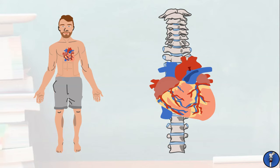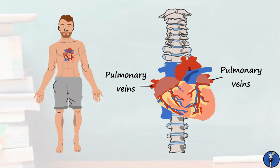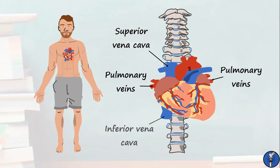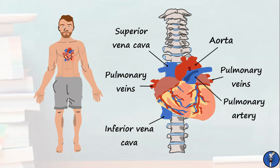There are four main groups of vessels involved in carrying blood into and out of the heart. Draining into it are the pulmonary veins and the superior and inferior vena cava. Draining out of it are the pulmonary artery to the lungs and the aorta to the rest of the body. Today, we're going to look at the aorta and its branches.